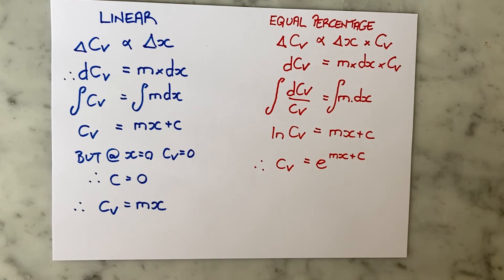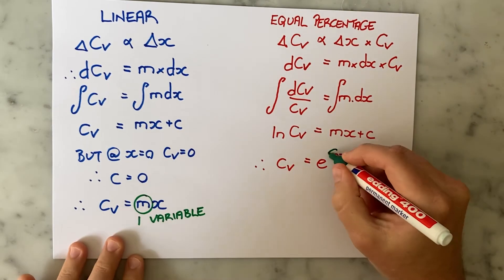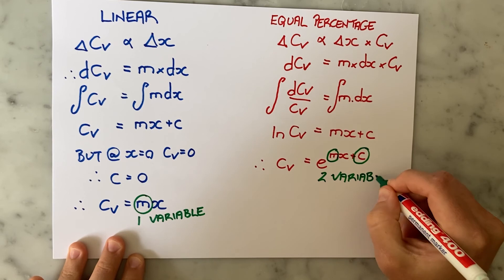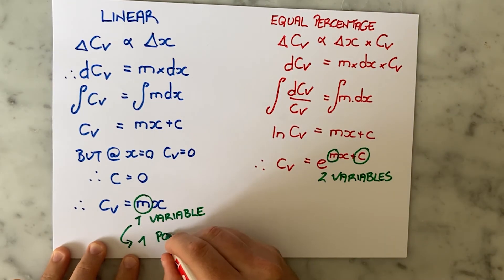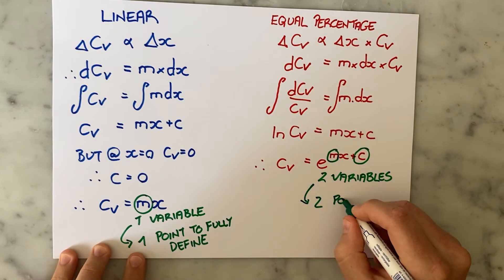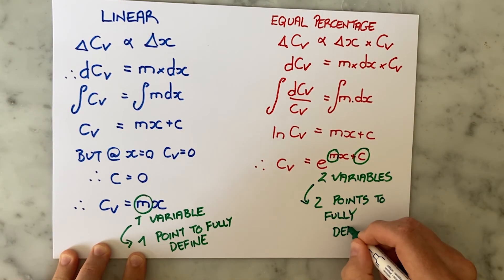So I have two variables that I need to solve for, which also means that I need to know or define two points—meaning two pairs of valve opening and CV—before I can fully characterize an equal percentage valve.